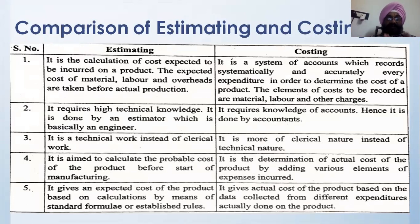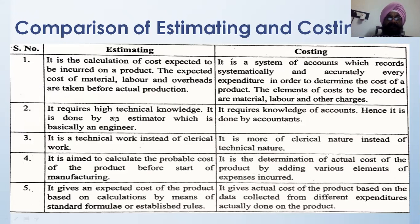Now, what is the difference between estimating and costing? Estimating is the calculation of cost expected to be incurred — expected costs of material, labor, and overheads are taken before actual production. Costing, on the other hand, is the systematic recording of cost after the product is manufactured. Estimating requires high technical knowledge — the estimator needs to be an engineer with full knowledge of materials, production processes, and machines. For costing, knowledge of accounts alone is sufficient.